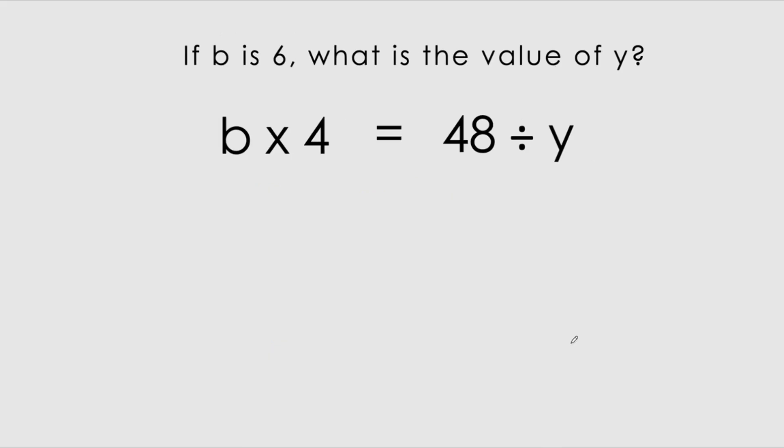Now, we've got b times 4 equals 48 divided by y. So now they've said if b is equals to 6, what is the value of y? So now our first step is to sub or substitute b equals 6. So we've got 6 times 4 gives us 48 divided by y. 6 times 4 gives us 24 equals to 48 divided by y. So now from this, you don't really have to manipulate it. But 48 divided by what gives us 24? Actually, 48 divided by 2 gives us 24.